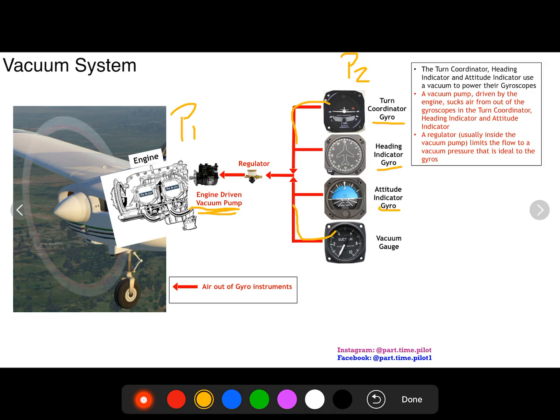So the engine driven pump is going to change and it's going to create different amounts of pressure differential. So the regulator ensures that that pressure differential stays about the same so that your turn coordinator, heading indicator, and attitude gyro are always acting about the same no matter what engine RPM.